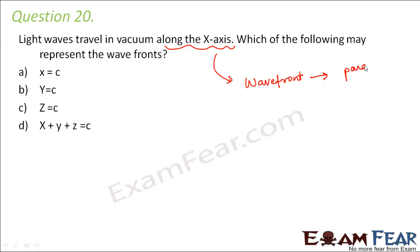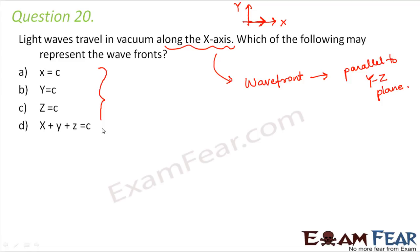So in that case, the wavefront must be parallel to the yz plane. Let's say this is your x-axis, this is your y-axis. If the light waves are traveling along the x direction, then the wavefront has to be in the perpendicular direction — so the wavefront will be somewhere in the yz plane. It cannot be in the x plane. So now, for something to be in the yz plane, what would be the expression? If you look at all of these expressions, which one represents something parallel to the yz plane?